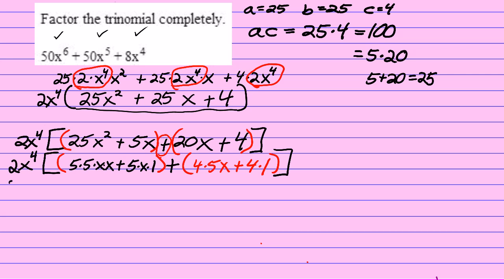So, on the outside of the brackets, I have 2x to the fourth. On the inside of the brackets, I'll have 5x times 5x plus 1, and over here I'll pull out a 4 common factor, and I'll have 5x plus 1, and then close my brackets.